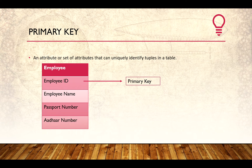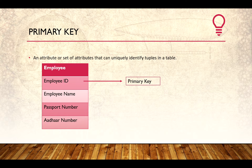The first and foremost is the primary key. As we all know, a primary key is an attribute or set of attributes — you can say column or set of columns — that can uniquely identify records in a table. I have taken an example of an employee table where we have columns: employee ID, name, passport number, and Aadhar number. Employee ID can be one probable candidate for the primary key, but passport number and Aadhar number are also unique and could be made a primary key. We have to think about what will be the most suitable choice, which will help us in future joins with other tables.